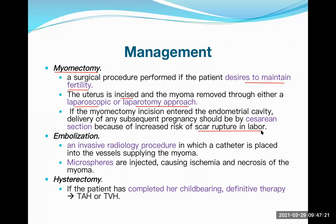This relates to the obstetrics discussion of caesarean section: if a classical caesarean section or a deep myomectomy incision has reached the uterine cavity, there is a high chance of rupture in subsequent labor. So next time she becomes pregnant, delivery by caesarean section is the safe option. Proper history must be taken — ask whether any prior surgery was done. If the patient doesn't remember, check the hospital notes.